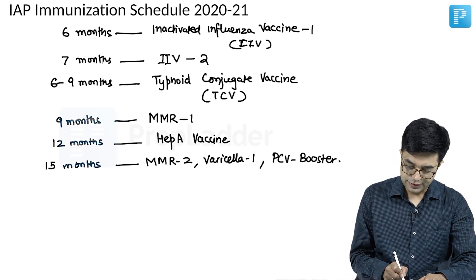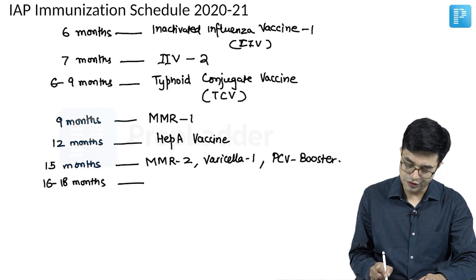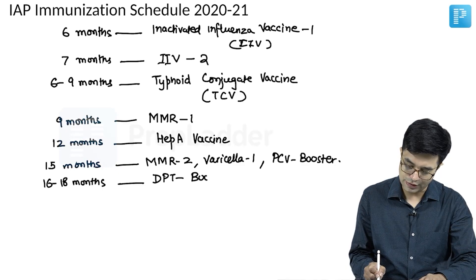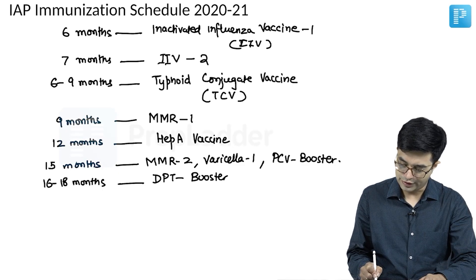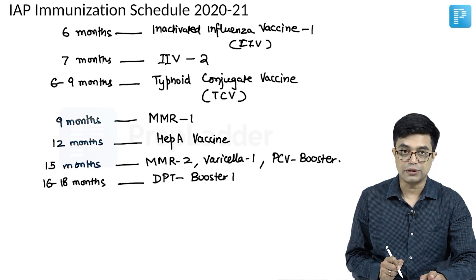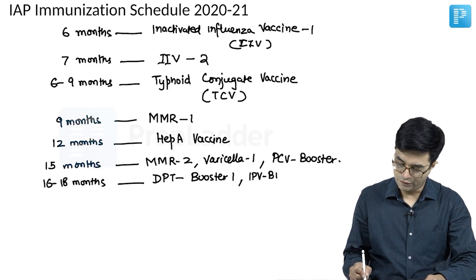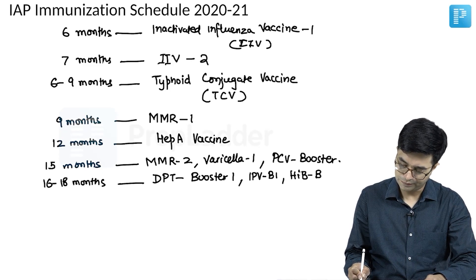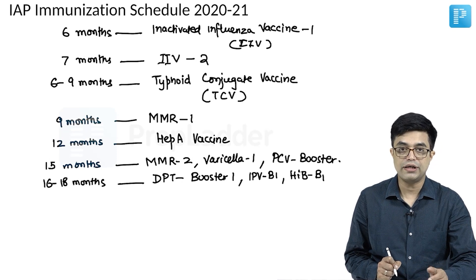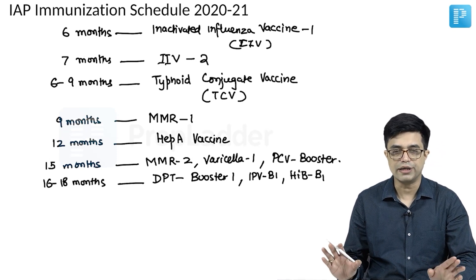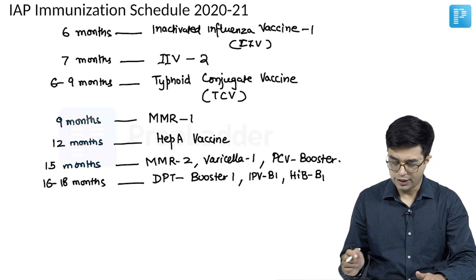Then at 16 to 18 months, you will use DPT booster 1 — whole cell or acellular. You will use IPV booster 1 and HIB booster 1. Hepatitis B and rotavirus boosters are not recommended, so they will not appear here.